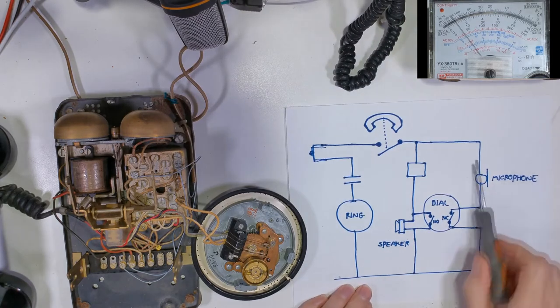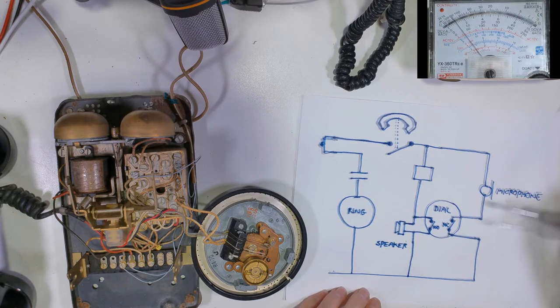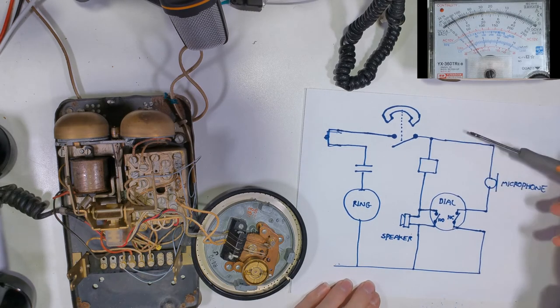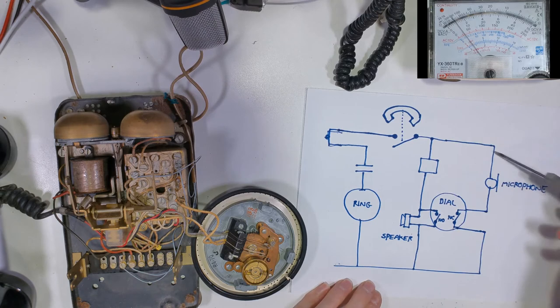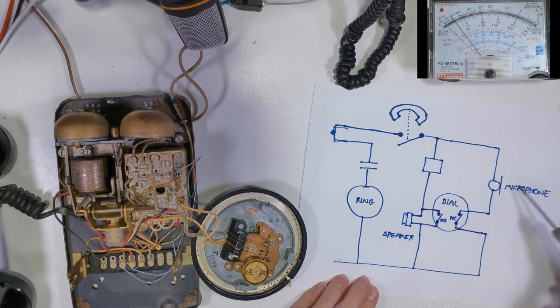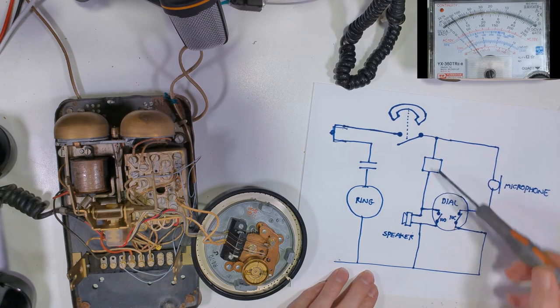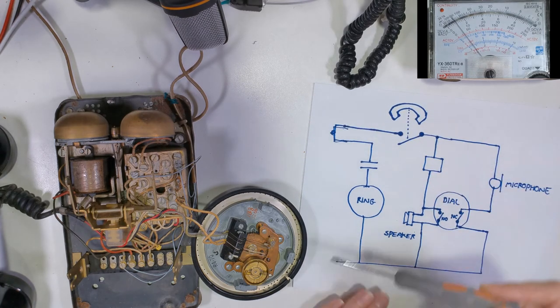As you speak in it, is causing the voltage to go up and down with your speech which is going back to the phone exchange also through the speaker as well which is why you can hear yourself talk. So the audio voltage is going here and also going that way to the other telephone wherever that's located.